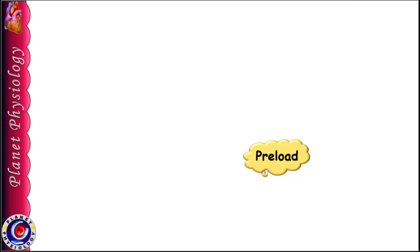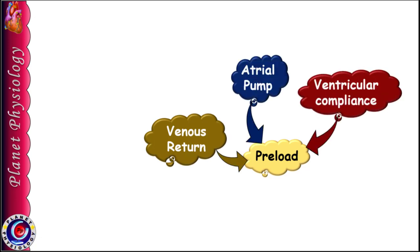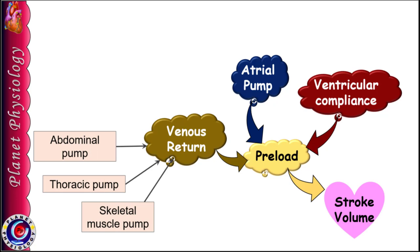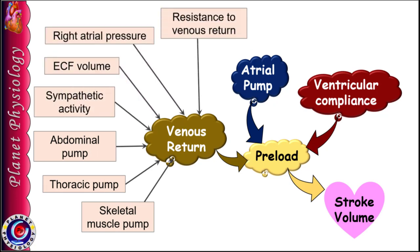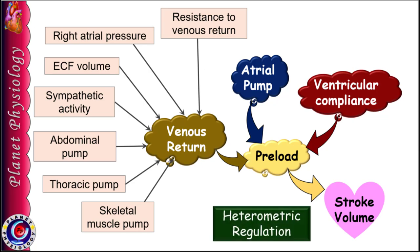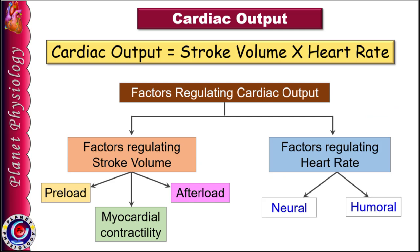To recap: preload is determined by venous return, atrial pump activity, and ventricular compliance. Venous return is decided by the skeletal muscle pump, thoracic pump, abdominal pump, sympathetic nervous system, extracellular fluid volume, right atrial pressure, and resistance to venous return. All these factors regulating preload and ultimately cardiac output are part of heterometric regulation. This completes the first and major part of stroke volume regulation — preload.